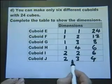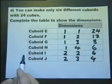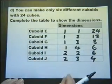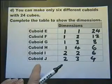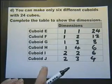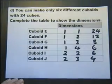These are the only three numbers that multiply together to give me 24. If we put these numbers in a different order it wouldn't make a new cuboid. So there's our six different cubes.